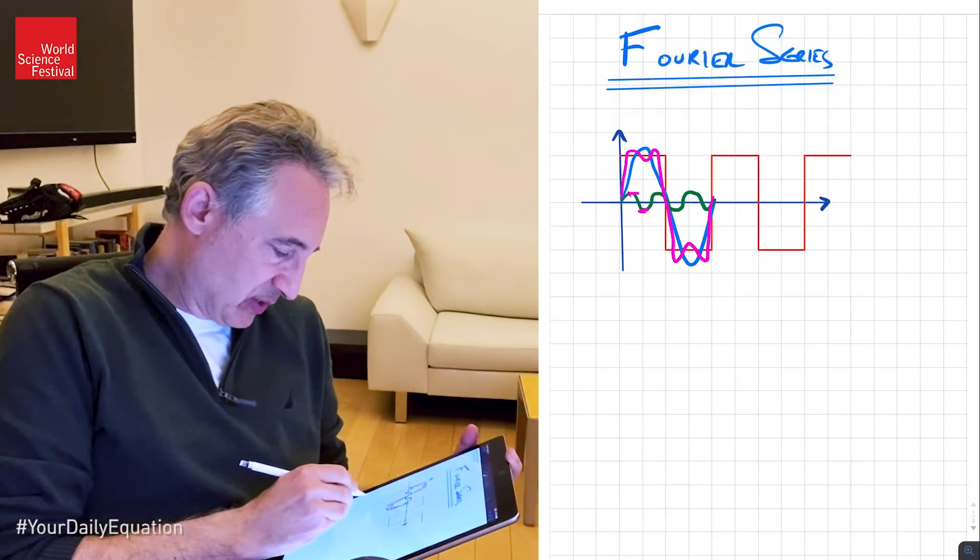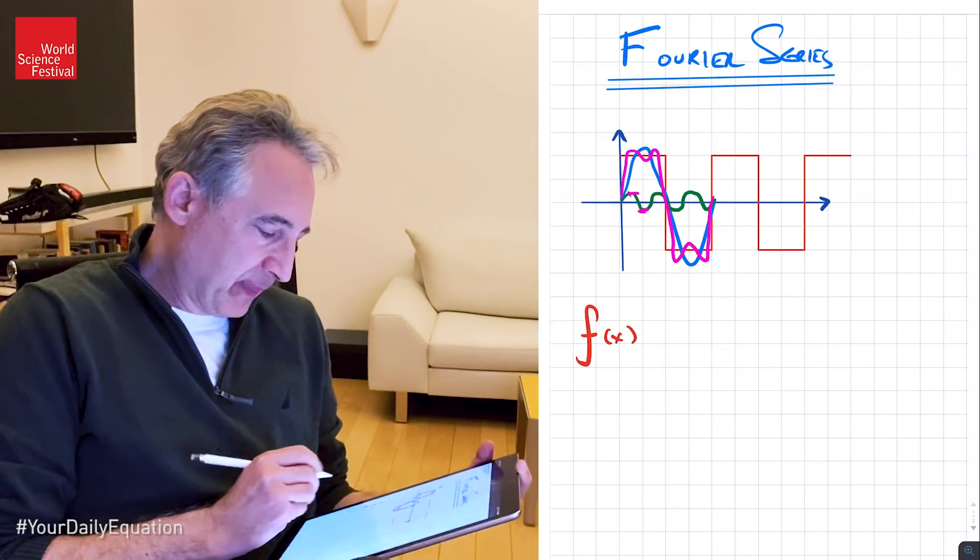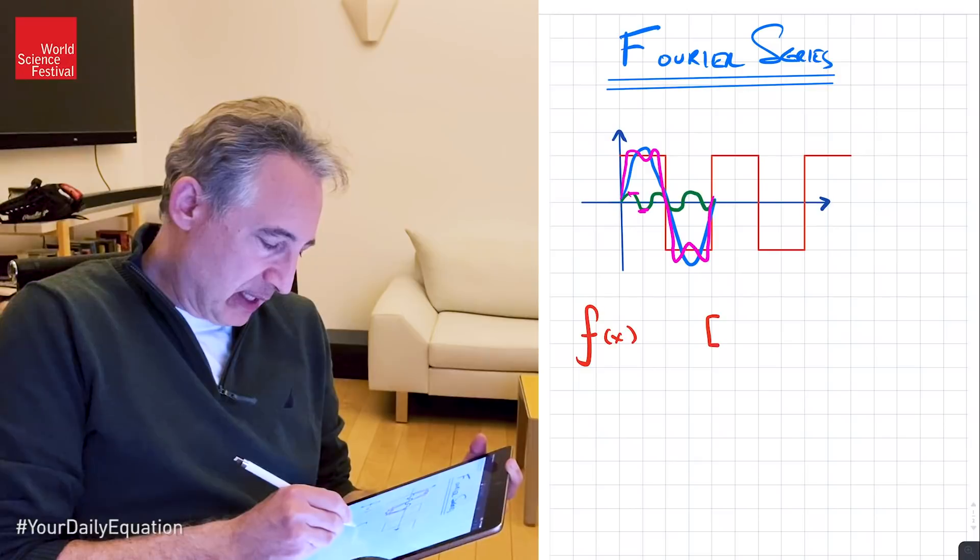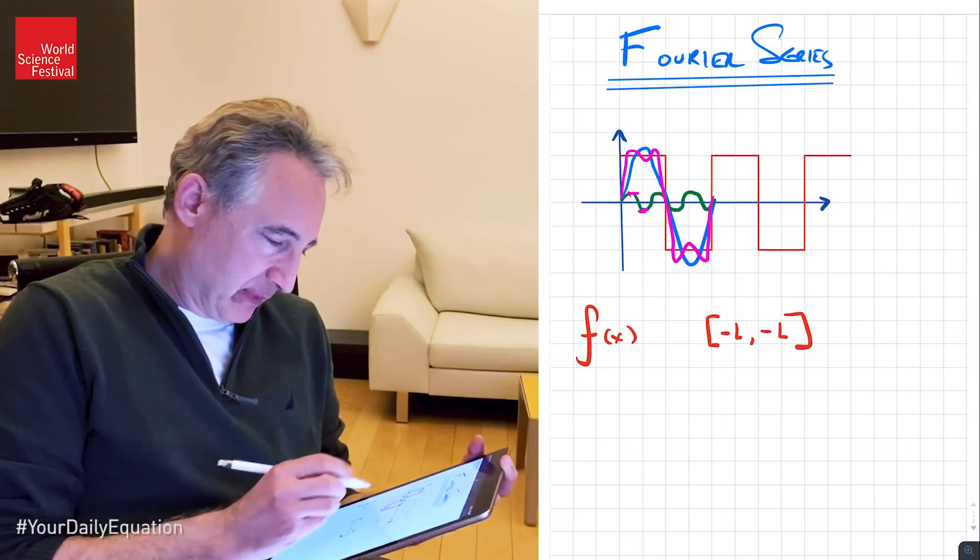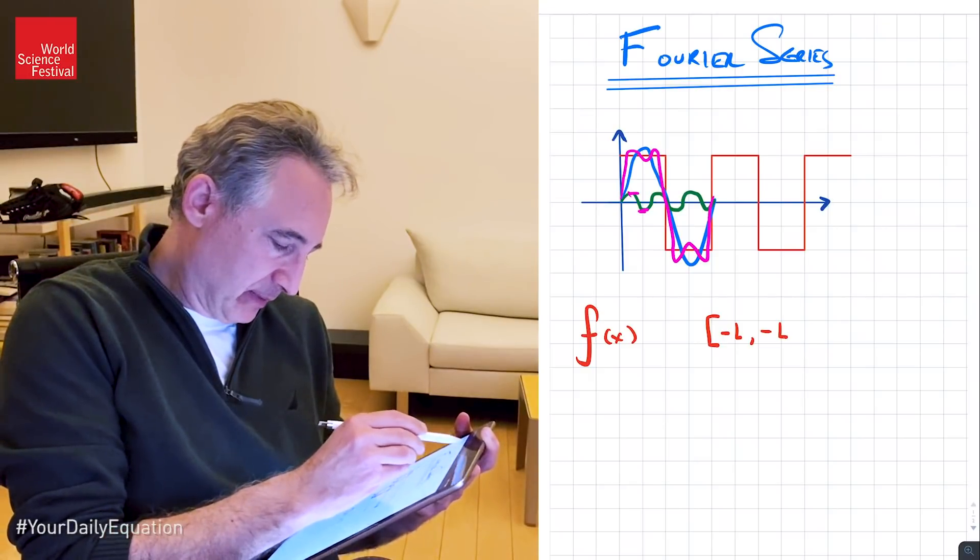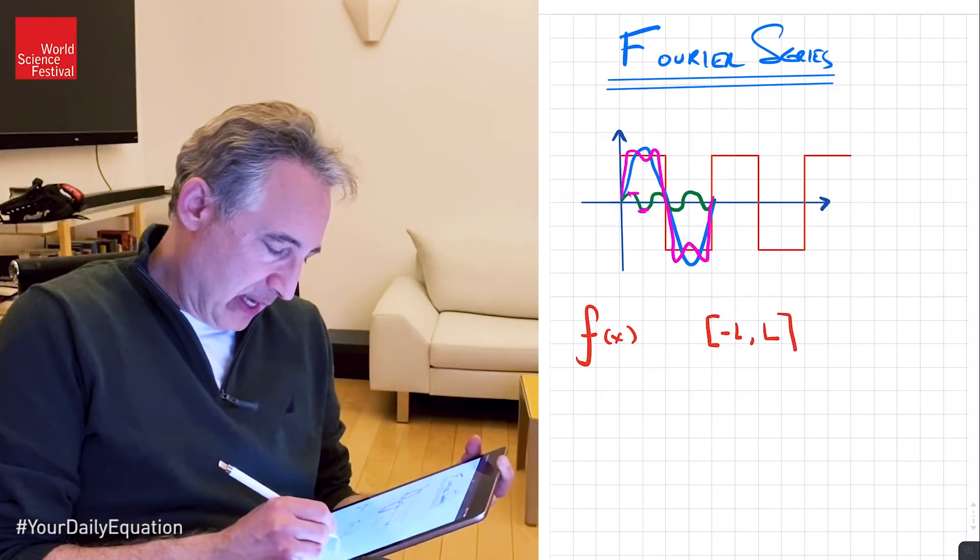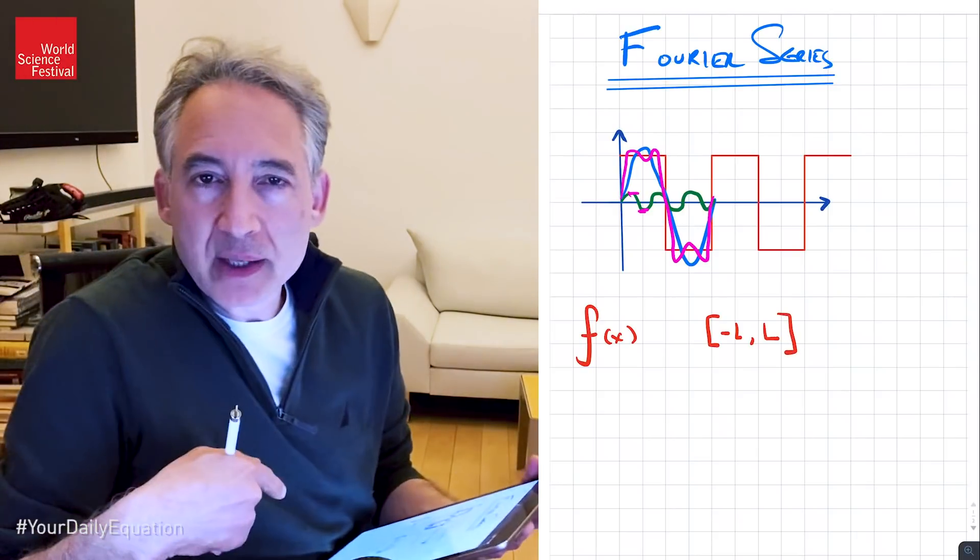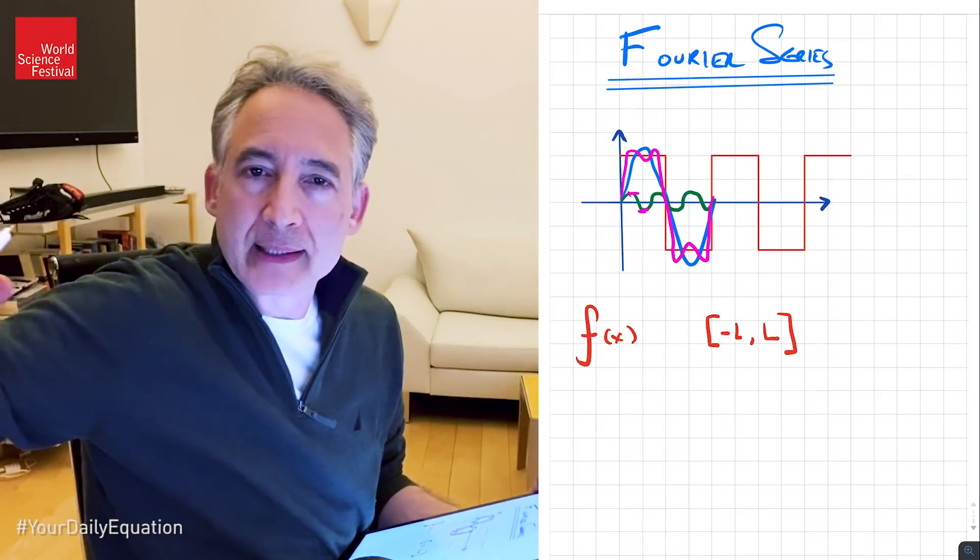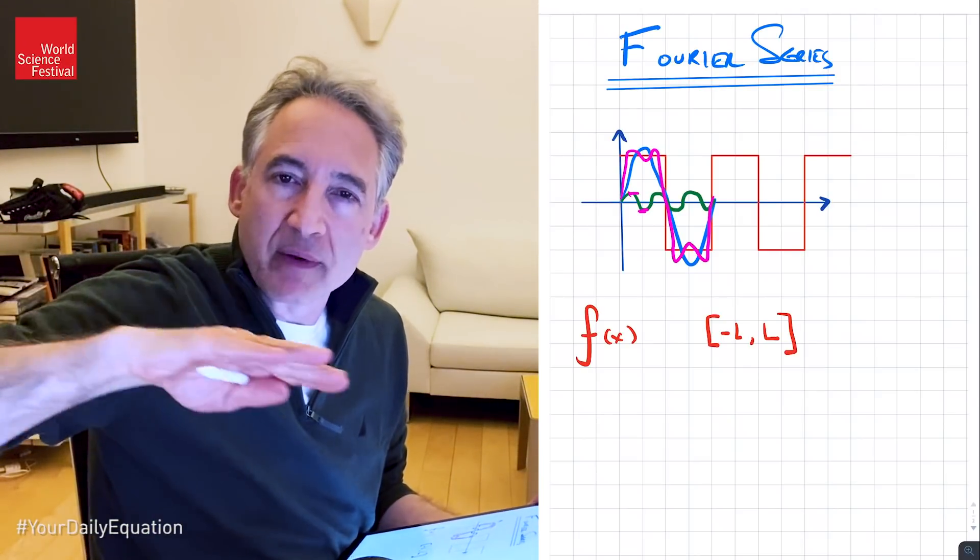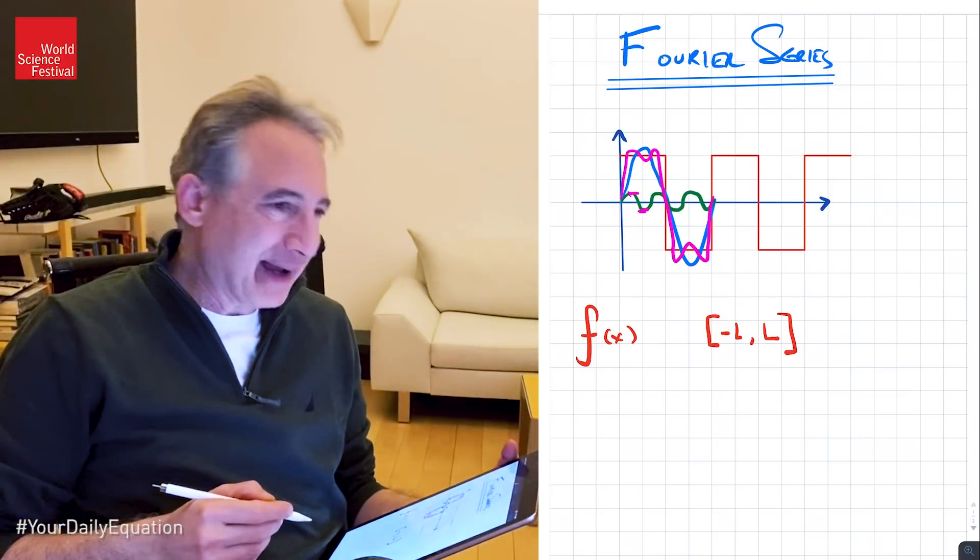But now let me just write down some of the key equations. And therefore, let me start with a function, any function called f of x. And I'm going to imagine that it's periodic in the interval from minus L to L. So not minus L to minus L. Let me get rid of that guy there. From minus L to L.